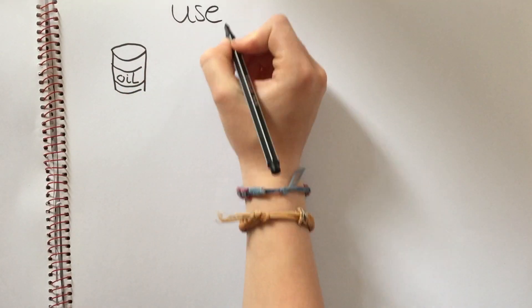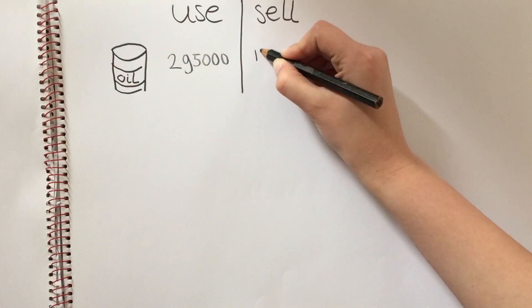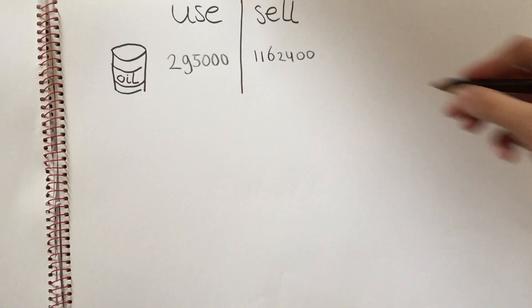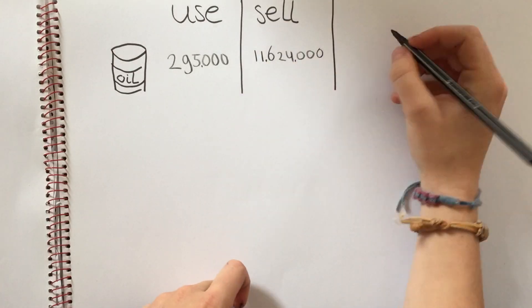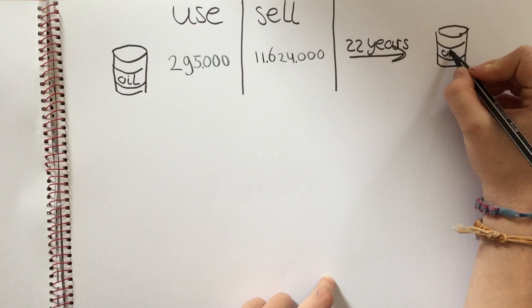Saudi Arabia uses 295,000 barrels of oil per year and it sells another 11,624,000 barrels. And if they continue this way, in 22 years Saudi Arabia will not have any oil left.